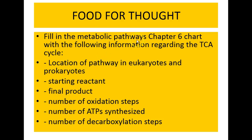At this point you should be able to fill in the TCA portions of the chapter six chart on metabolic pathways, noting the location of the pathway in eukaryotes and prokaryotes, the starting reactants, the final products, the number of oxidation steps per glucose molecule, the number of ATP synthesized per glucose molecule, and the number of decarboxylation steps per glucose molecule.